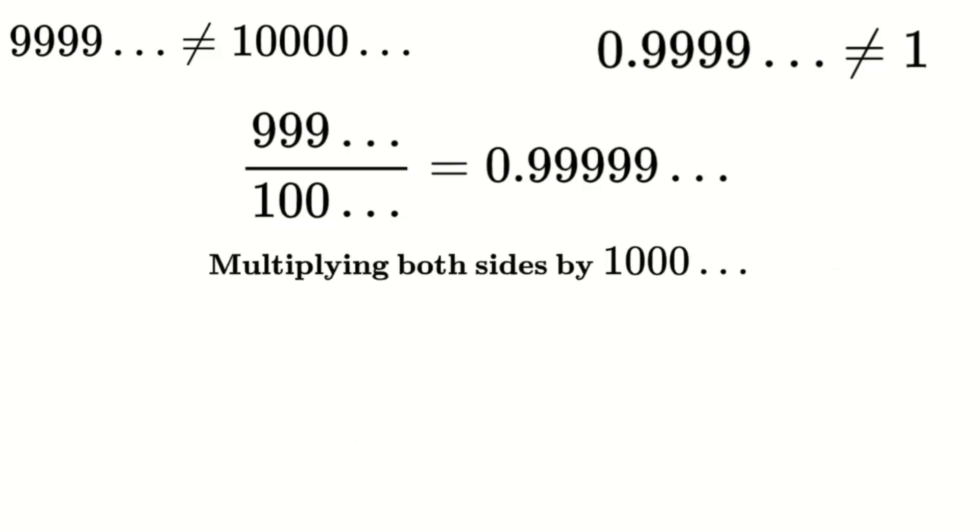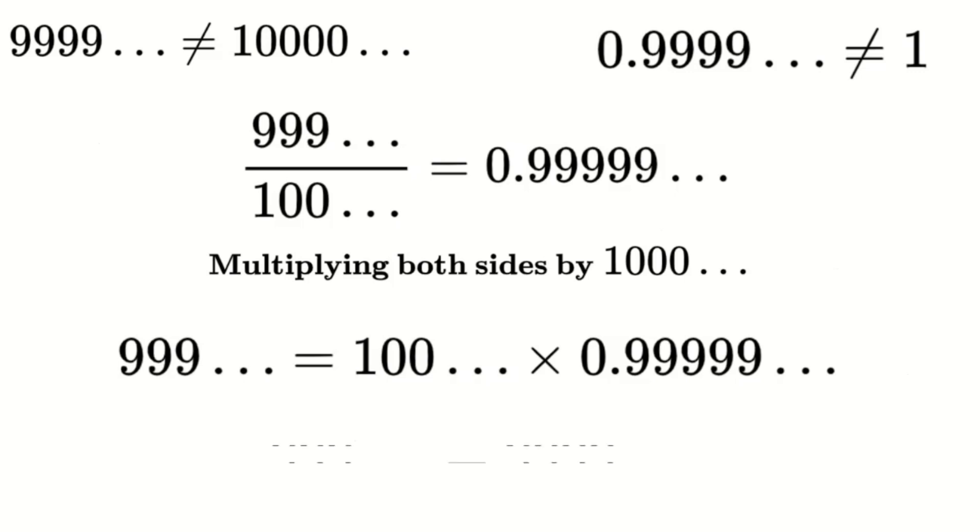Multiplying both sides by the denominator, we get 999 to infinity equals 1,000 to infinity times 0.99 dot dot up to infinity, which results in 999 to infinity. Once again, this contradicts the assumption that 999 to infinity equals 1,000 to infinity, reinforcing that 0.99 dot dot up to infinity is not actually equal to 1.